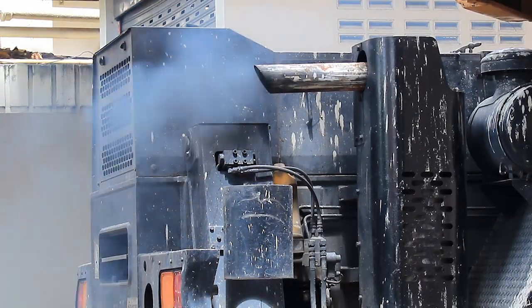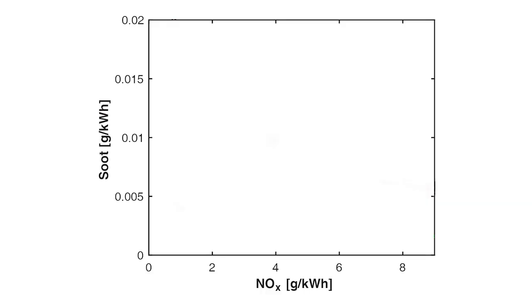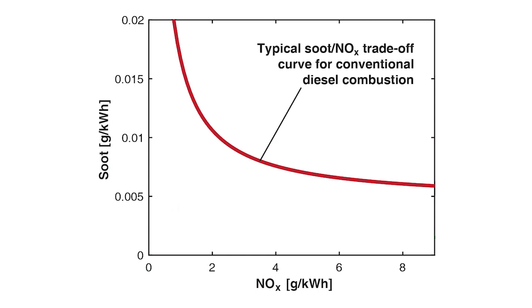A diesel engine produces two main problematic emissions, soot and nitrogen oxides or NOx, and typically the problem has been that when you do something to lower one of those emissions, the other one goes up. This has been called the soot-NOx trade-off.